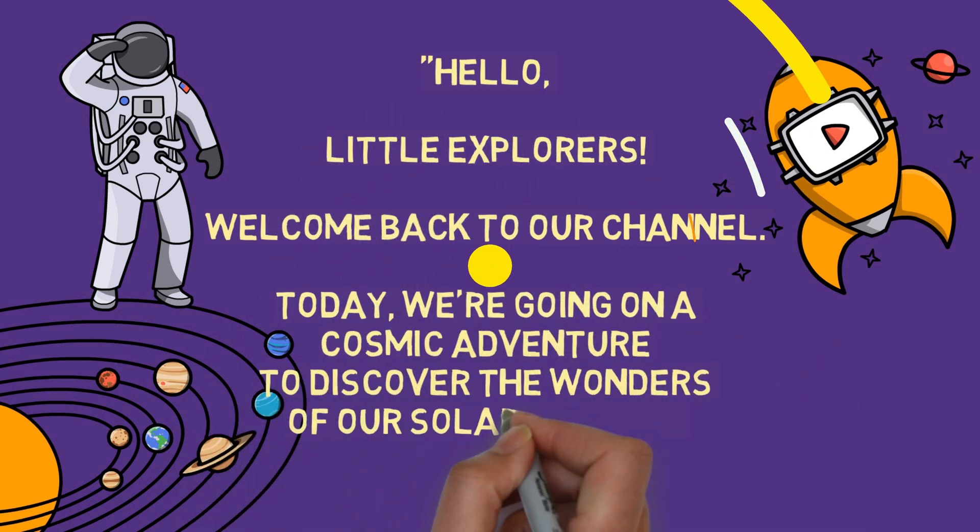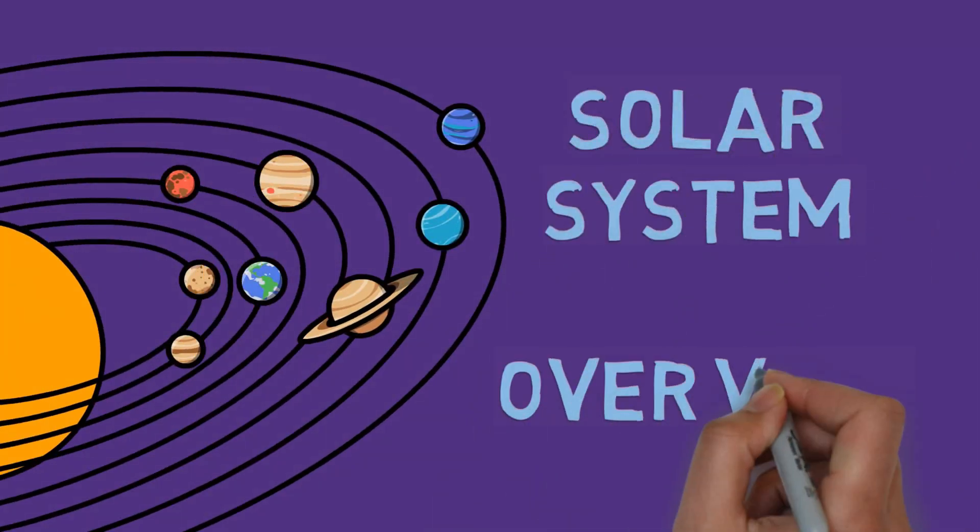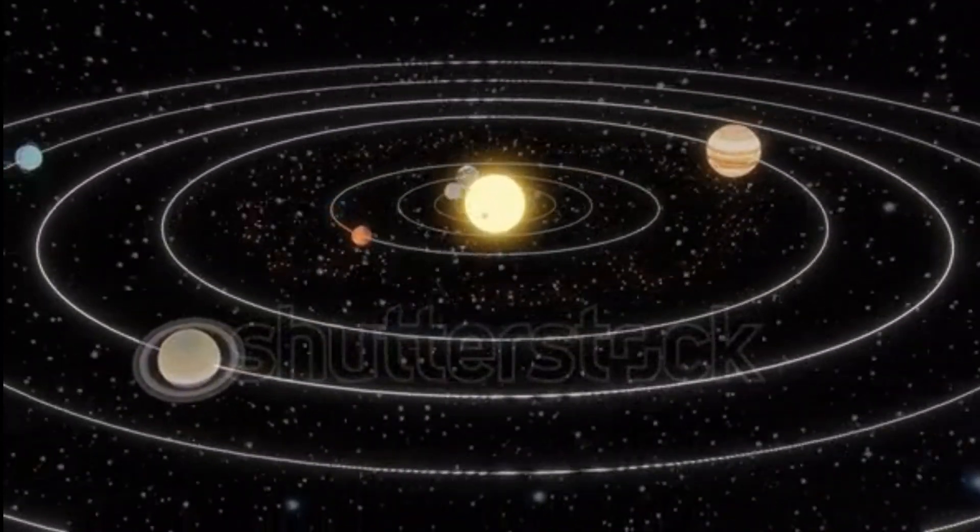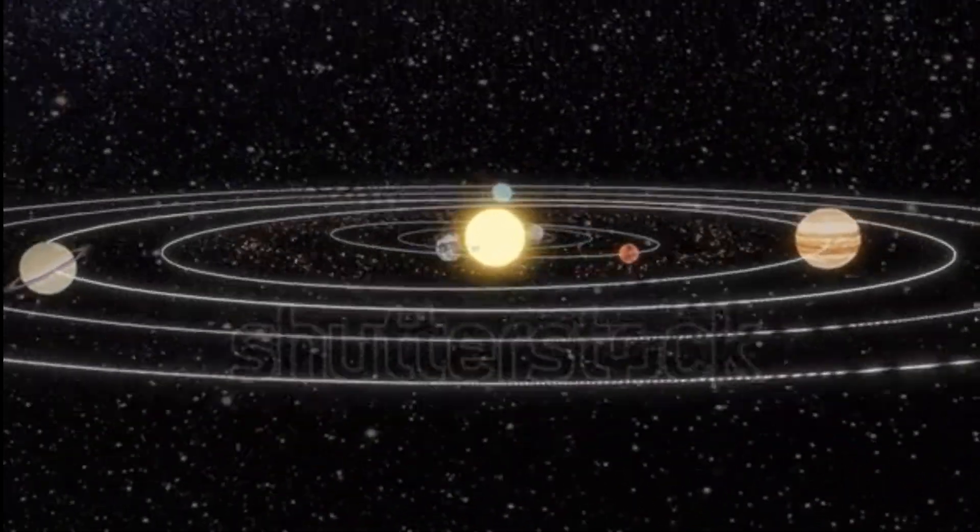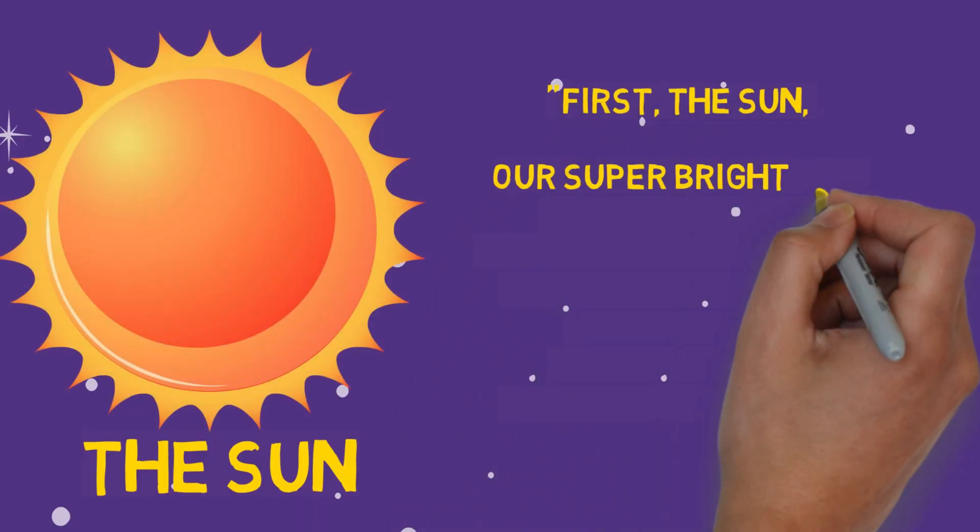Our solar system is like a big cosmic family, with the sun as the parent and the planets as its children. Let's meet the gang! First, the sun - our super bright and super hot star.